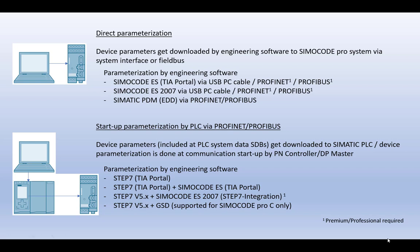As mentioned before, in your Step 7 TIA Portal project, the offline parameters for a SimulCode device are already included as soon as you have inserted a SimulCode device to your network configuration. If you would like to use the startup parameterization by PLC, it is important to set these SimulCode parameters in the right way for your application. Additionally, the Profibus address or Profinet device name has to be set to the device according to your Step 7 project.